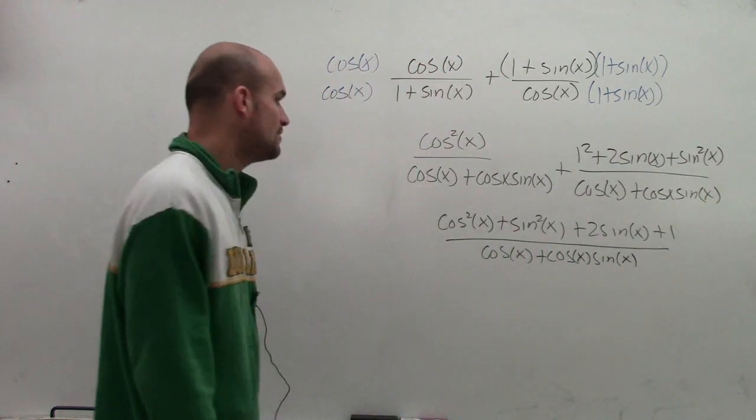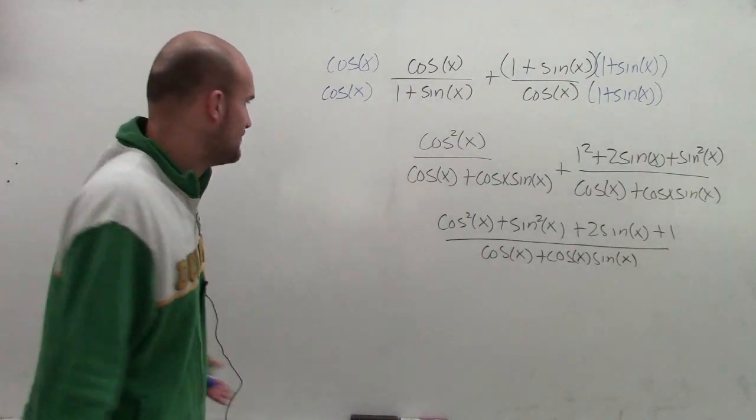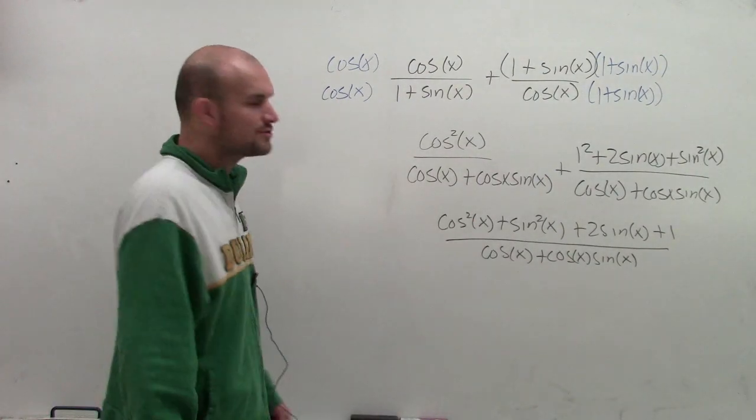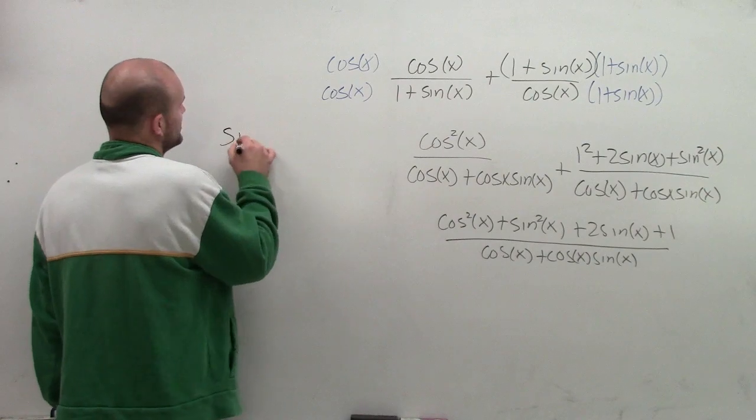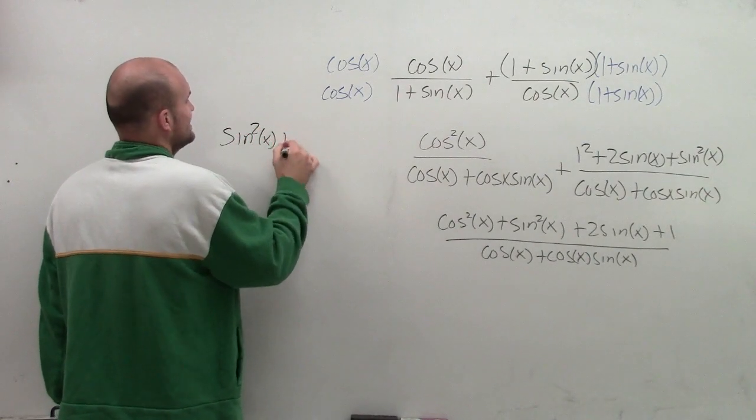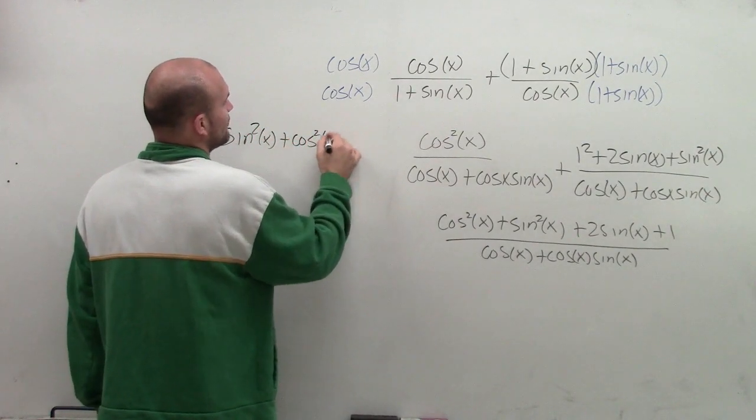So now what we want to do is see, can we simplify this any further? Well, I know I have cosine squared and sine squared. So therefore, I'm going to look into the Pythagorean identities and see what I can do to rewrite those.